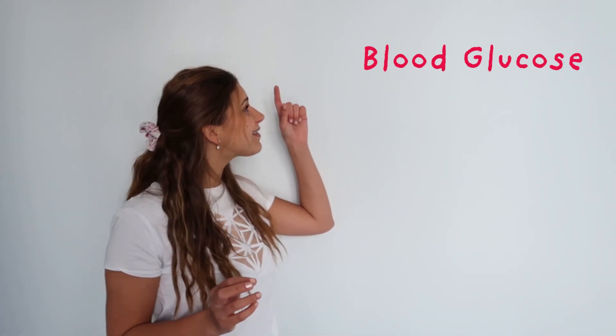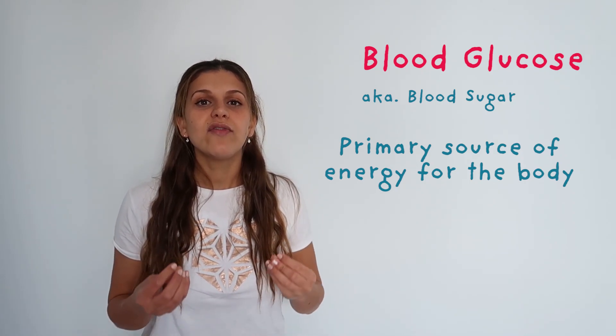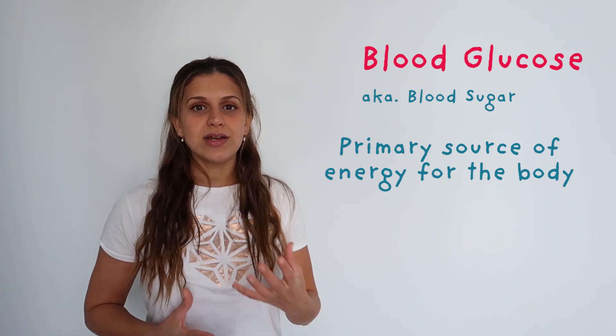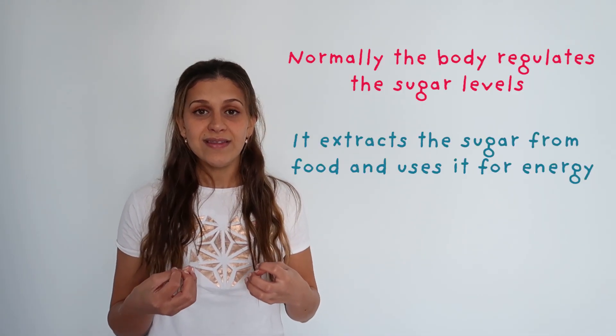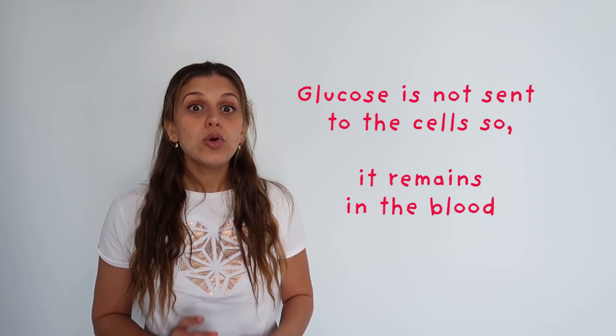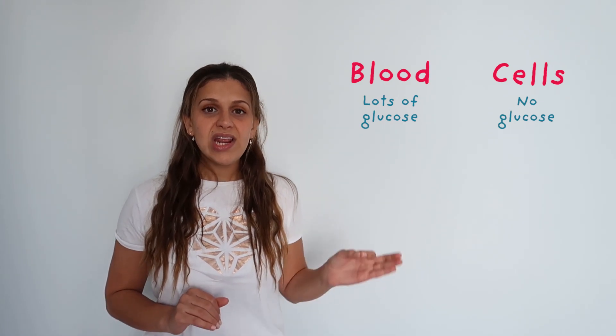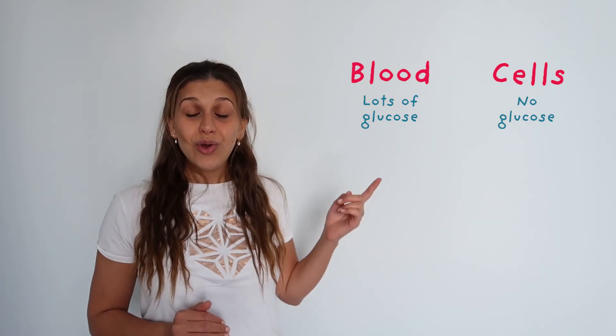Before we get into the nursing care, let's take a step back and look at what the disease actually is and why it occurs. We are first going to look at blood glucose — or as you may know it, blood sugar — which is the primary source of energy for our body. Our body will use these sugars to function on a daily basis. In most people, the body regulates this glucose: it extracts it from food or drinks and then distributes it accordingly. But there are certain people who lose control over this glucose, so it doesn't go into the cells. The glucose remains in the blood — a high level of glucose in the blood and a very low level inside the cells. We call this problem diabetes.